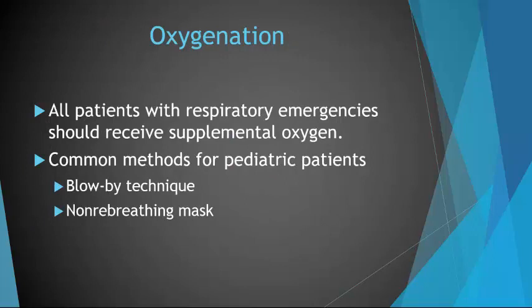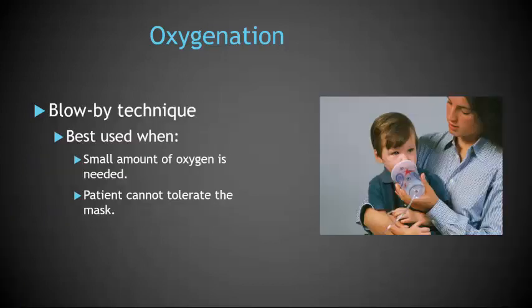To provide oxygenation, you are going to have to figure out whether we need to use ventilatory equipment or oxygenation equipment or both. Assessing ventilatory and oxygenation status is part of your breathing assessment. All patients with respiratory emergencies should receive supplemental oxygen. Your two most common delivery methods for supplemental oxygen are the blow-by technique and your non-rebreather mask. The blow-by technique is best used when only a small amount of supplemental oxygen is needed or when the patient cannot tolerate wearing the mask needed for higher oxygen delivery.